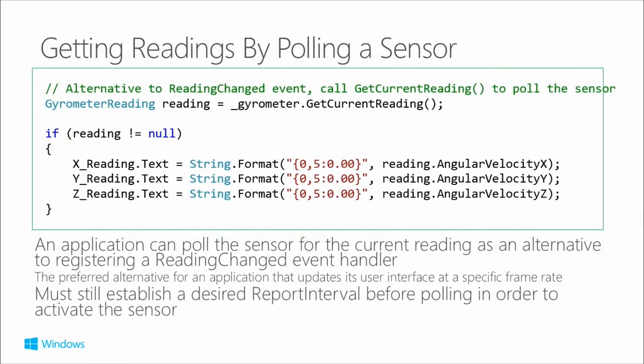You can obviously poll a sensor as well - that's the other way, not using the event handler. You can simply call the get current reading method, which gives you an instantaneous reading back from that sensor. It returns the same data but gives you more control over when you actually get a reading. Note that even if you're only doing one reading, you've still got to set a desired report interval before polling, because that's the trigger that actually activates the sensor.